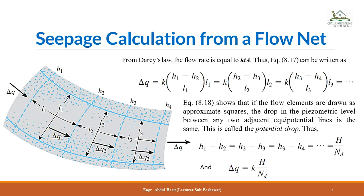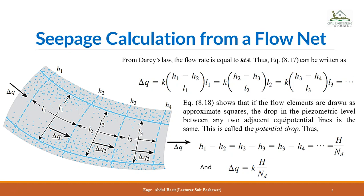The flow element may not always be perfectly square — it may be rectangular or even trapezoidal. For the area term: it is l1 multiplied by some width b or h, but since the out-of-plane width is taken as unit (one), l1 × 1 = l1. For the next potential drop it is k·(h2−h3)/l2 · l2, and so on. For a completely square element throughout the flow channel, the potential drop remains the same between any two equipotential lines.